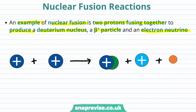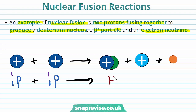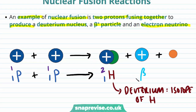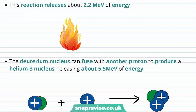We start with two protons, each with a proton number of 1 and a nucleon number of 1. These fuse to form a deuterium nucleus — an isotope of hydrogen with one proton and one neutron, giving it a nucleon number of 2. This process also produces a beta plus particle with proton number 1 and nucleon number 0, and an electron neutrino.